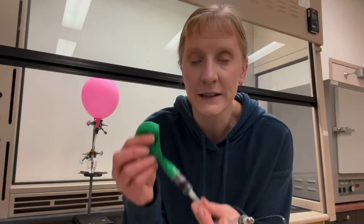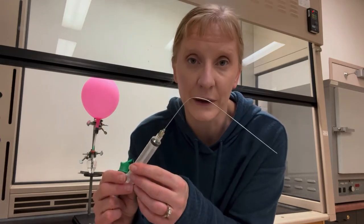So I'm going to flame dry a flask in order to remove water that can be attached onto the surface of the glass. And then I'm going to surround the flask with nitrogen gas using a balloon. And I'm going to add my reagents via a dry syringe.